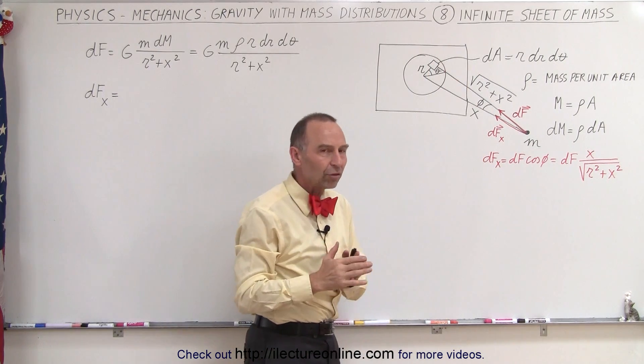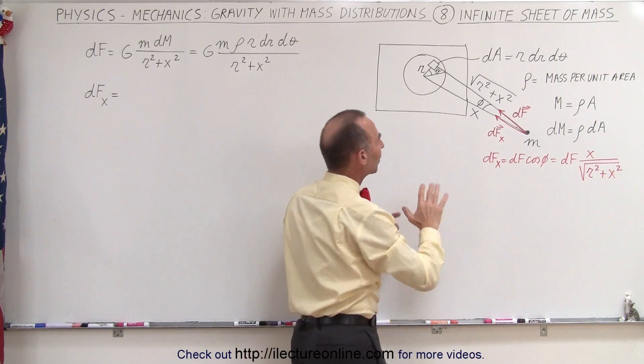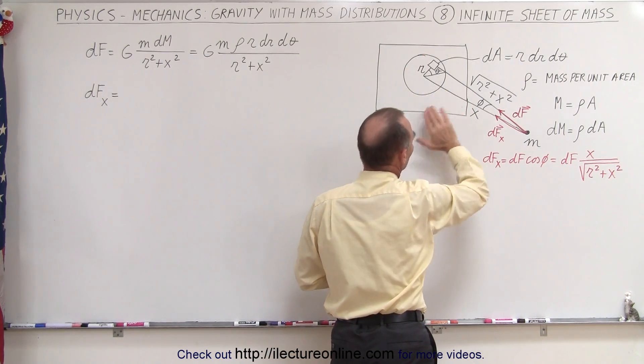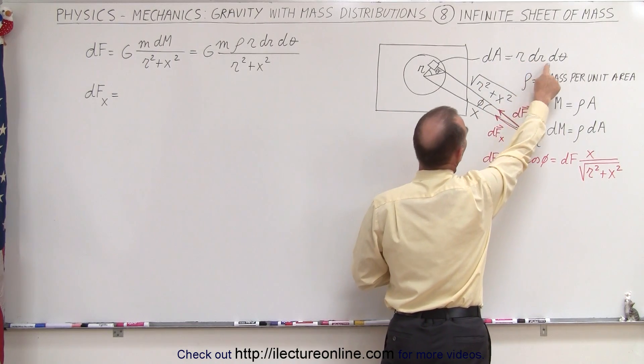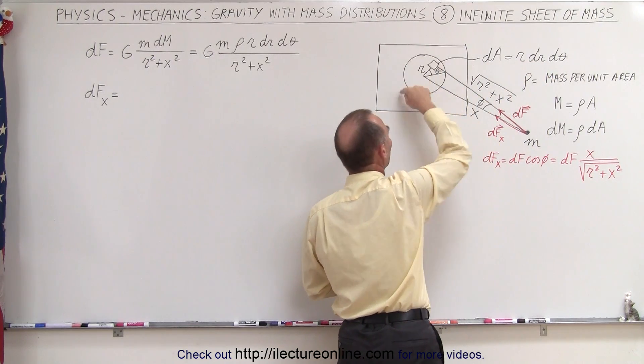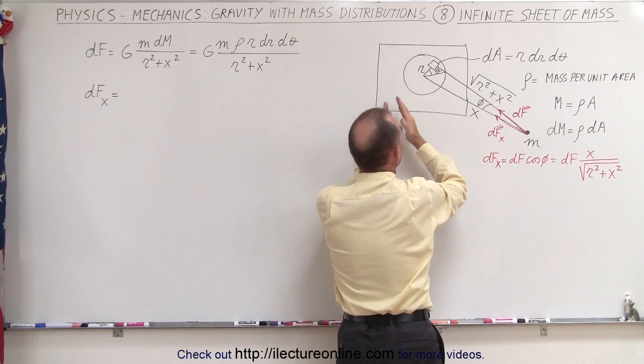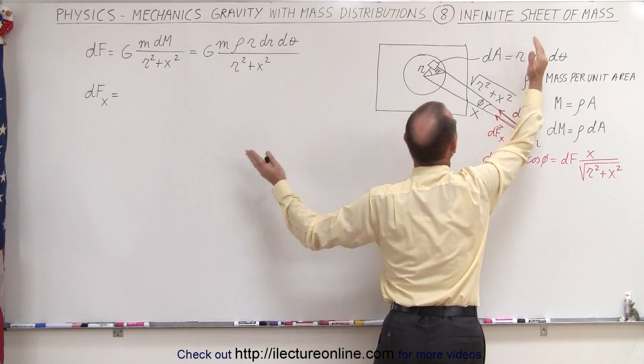We're going to use polar coordinates, like cylindrical coordinates, because otherwise doing rectangular coordinates will make this a little bit more difficult. So dA will now be called r dr d theta. We're going to integrate all the way around theta and then make the radius infinite.